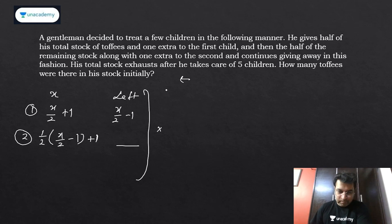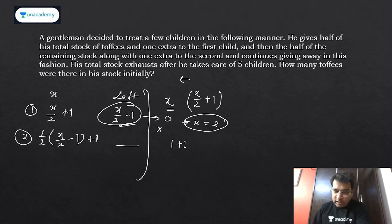The idea of such questions is to solve in the reverse manner - think on the last child. Before the last child, the lot is x. You give him half of that plus one extra. So before that it will be x - after giving to the second last child, leftover is x, then you gave half plus one extra. So you're left with x/2 minus 1. When you give to the last child you have nothing extra - your lot is exhausted. This should equal zero, which gives you x equals 2.